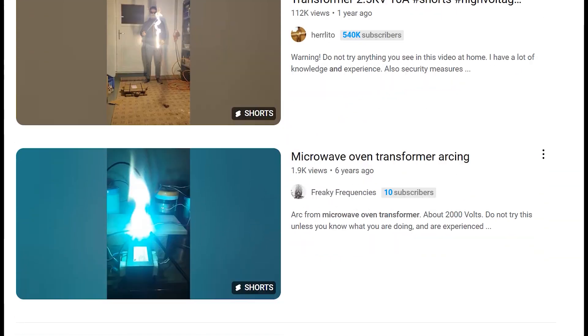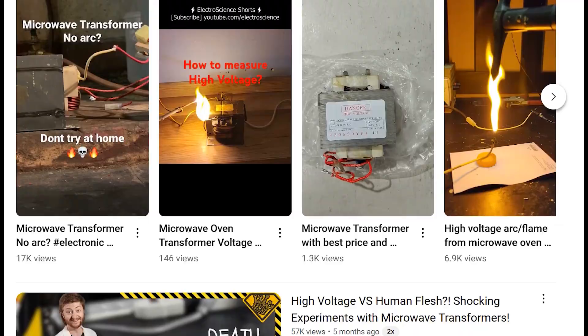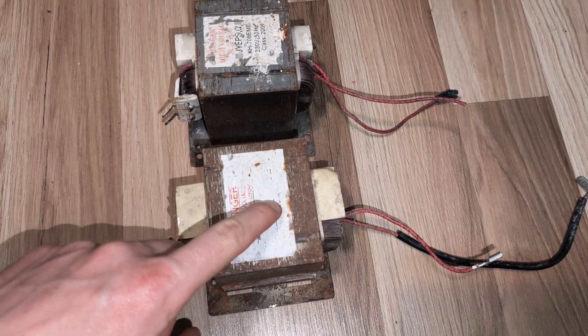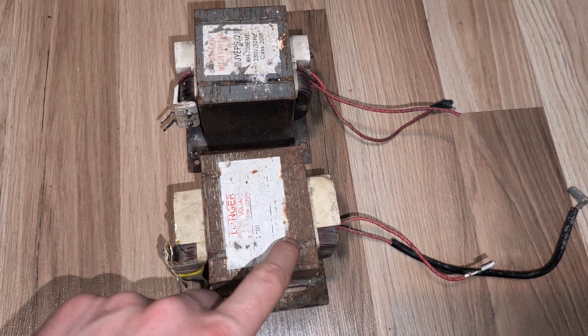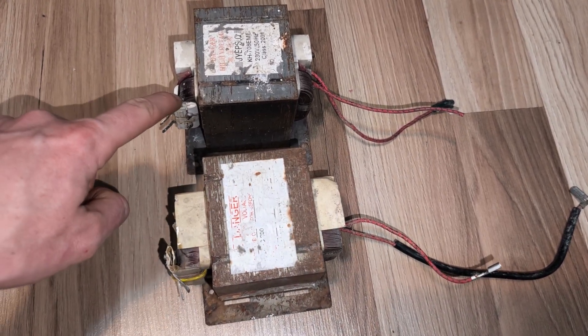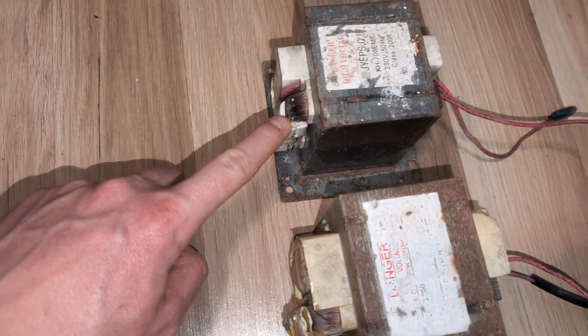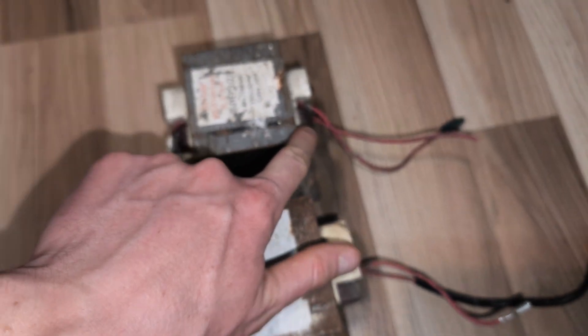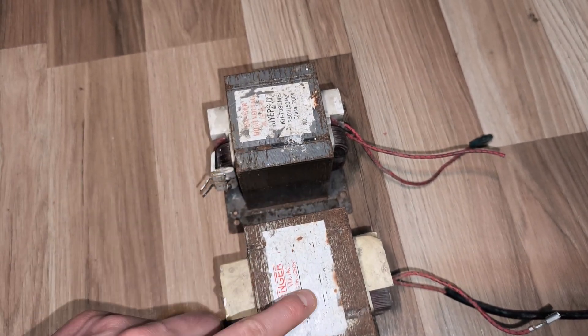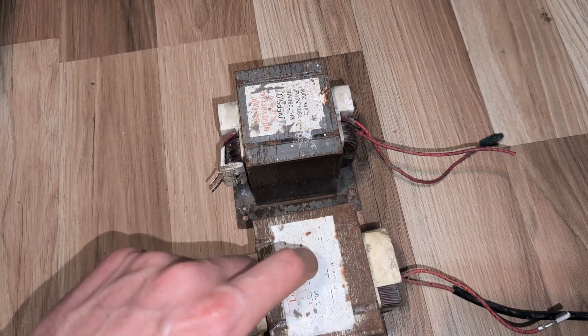Nobody on YouTube has ever attempted to do this experiment. What happens if you take one microwave oven transformer and connect its high voltage output directly into the primary of another transformer?